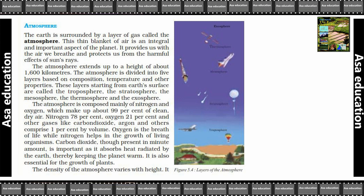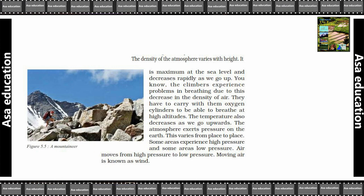The density of the atmosphere varies with height. It is maximum at the sea level and decreases rapidly as we go up. Joh density hai atmosphere ki, woh height ke saath vary karti hai — sea level pe sabse zyada hoti hai aur jaise jaise upar jaate hai, kam hoti jaati hai. You know, the climbers experience problems in breathing due to this decrease in the density of air.